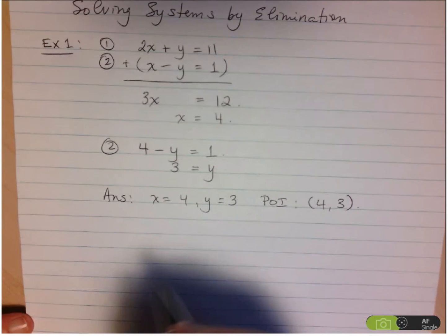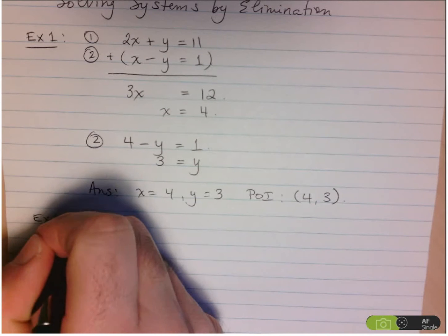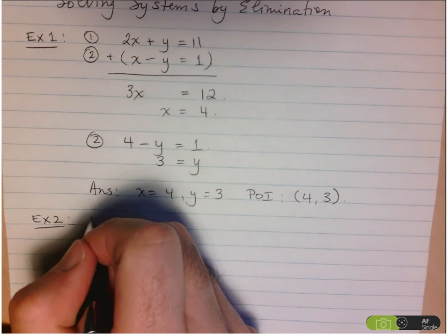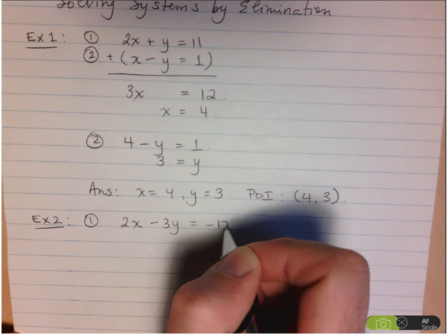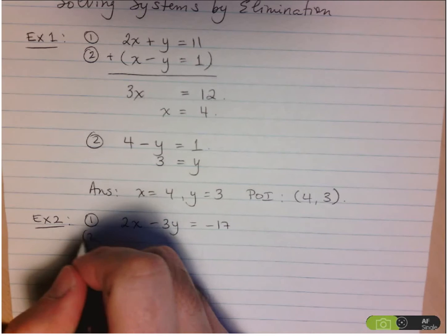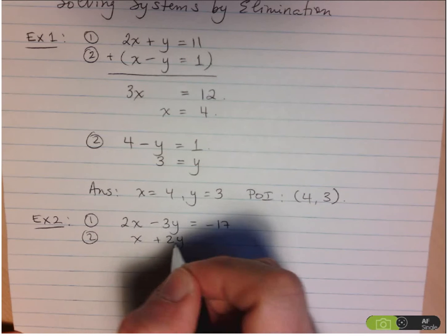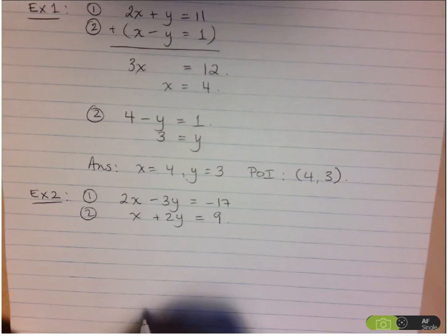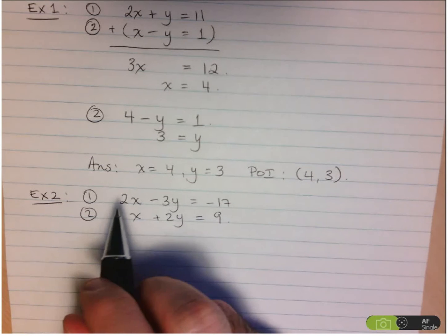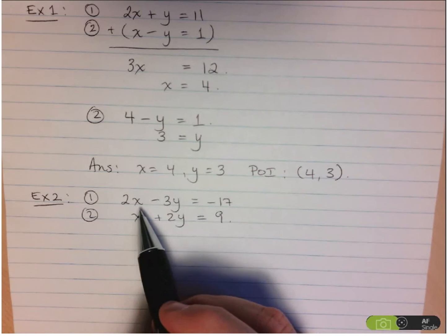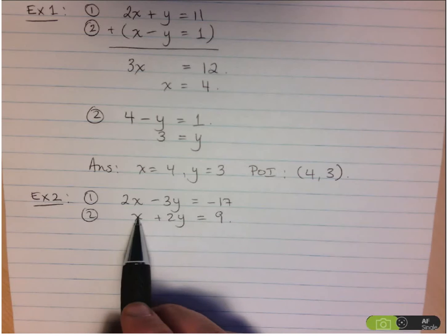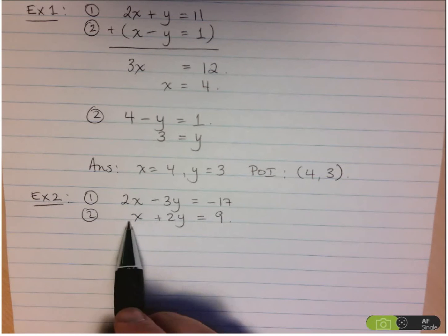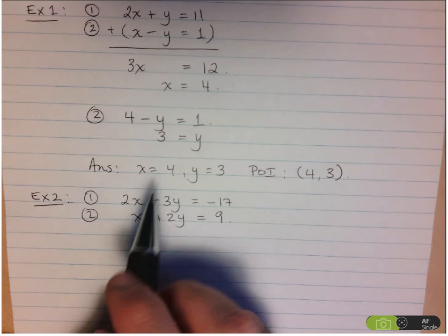Let's take a look at another example. Equation 1 is 2x minus 3y equals negative 17, and equation 2 is x plus 2y equals 9. This example isn't quite as simple as the first, because I don't have matching coefficients I can easily eliminate. I have an x in equation 2 and a 2x in equation 1. I could solve this easily by substitution, but let's see how we can use elimination.